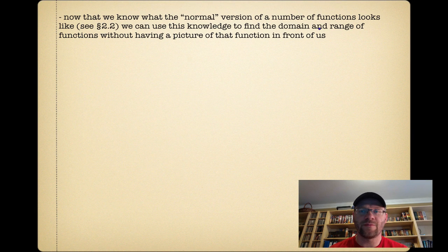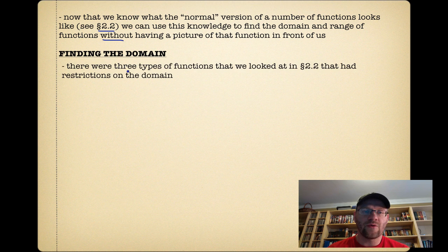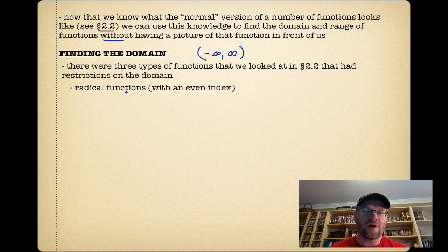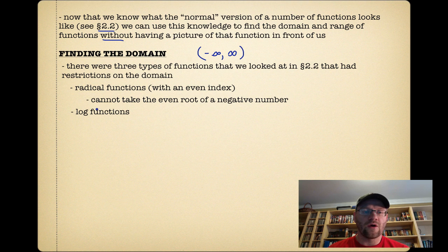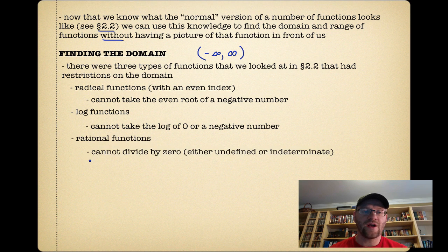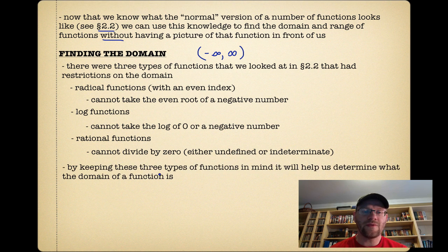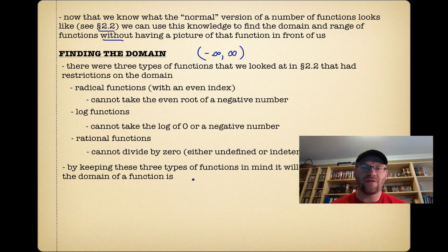Now that we know what a normal version of a number of functions looks like from section 2.2, we can use this knowledge to help find the domain and range of functions without having a picture. There were three types of functions that had restrictions on the domain: radical functions with an even index, because you can't take the square root or fourth root of a negative number; log functions, because you can't take the log of zero or a negative number; and rational functions, where we can't divide by zero, giving us vertical asymptotes or holes. Keeping these types of functions in mind will help us determine what the domain can be.